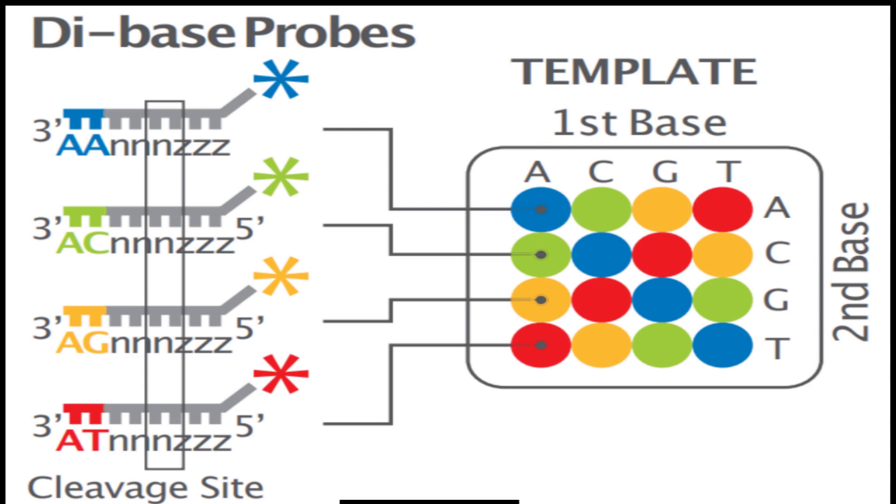For example, if they want to know the base at position five, they would use primer number two in ligation cycle two and primer number three in ligation cycle one to get the information they need.